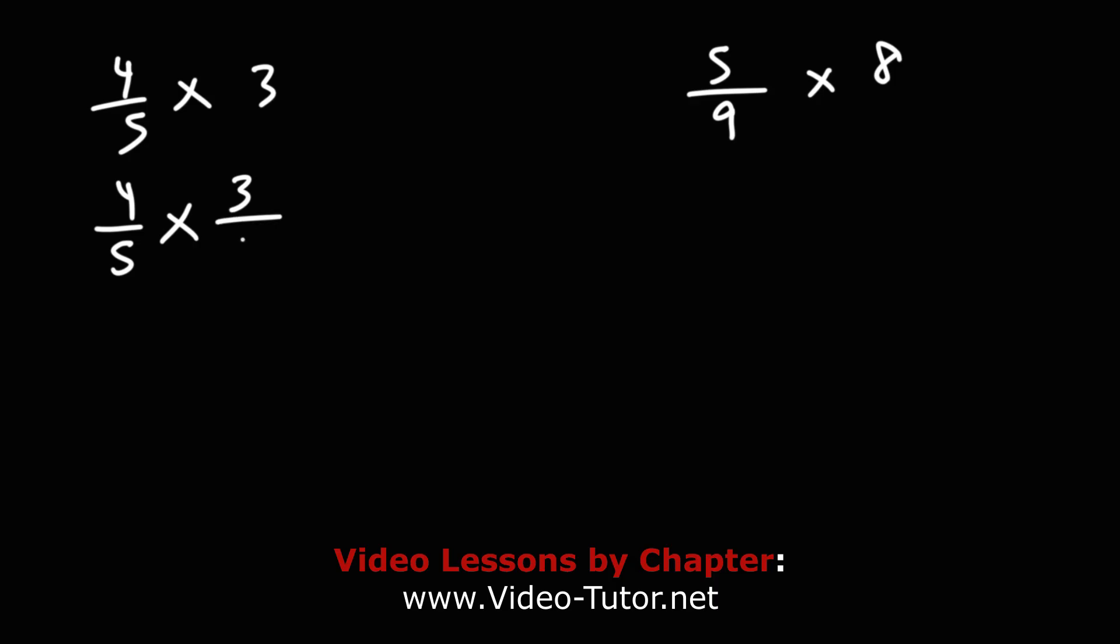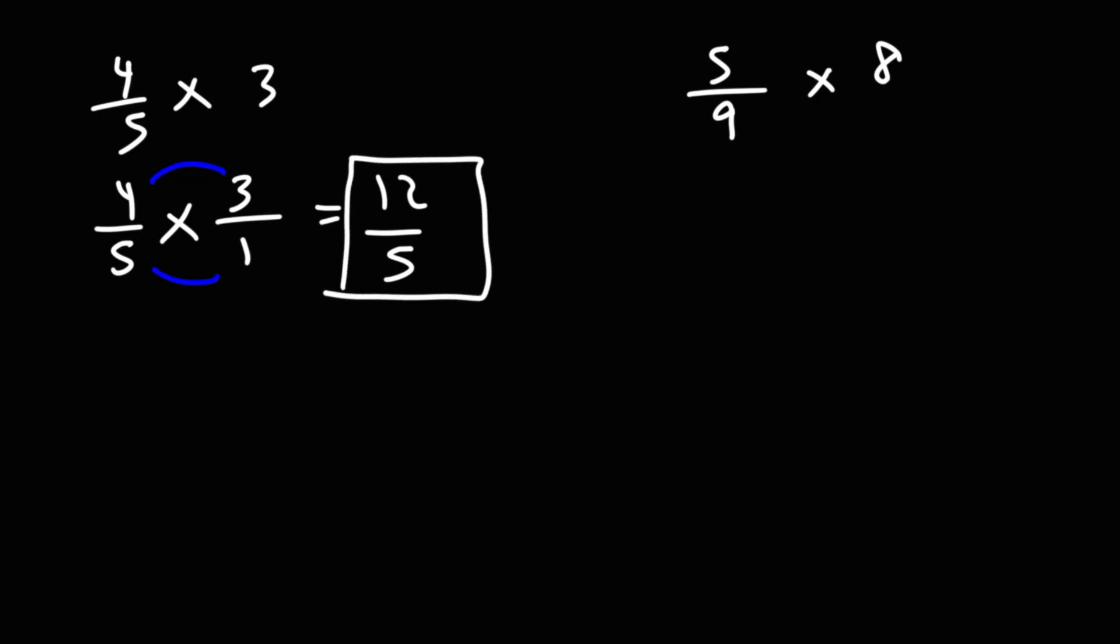Let's try these two examples. Let's multiply 4/5 by 3, and 5/9 by 8. So this is 4/5 times 3/1. The 5 and 3 we can't cancel, so we just got to multiply across. 4 times 3 is 12. 5 times 1 is 5. So the answer as an improper fraction is 12/5.